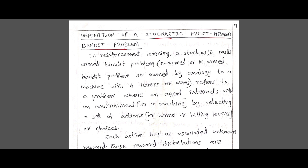When coming to stochastic, stochastic refers to a system or a process that involves randomness or uncertainty, where outcomes are determined by probability rather than being fixed or deterministic.